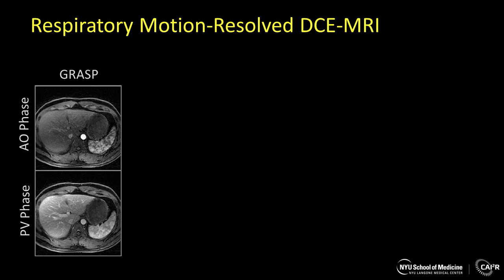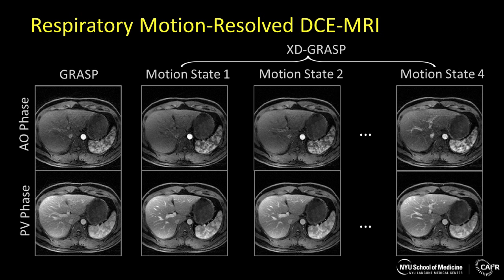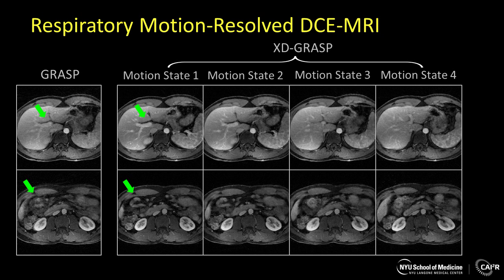Let's see a couple of examples. These two images are from a GRASP reconstruction that doesn't have any motion sorting. If we compare the GRASP results with XTGRASP results, we can see that XTGRASP achieved improvement in vessel-tissue contrast and image sharpness. This is not surprising because the result of GRASP is just the sum of results at each motion state in the XTGRASP reconstruction. This is another example, and we can see similar improvement in XTGRASP reconstruction when compared with GRASP reconstruction without any motion sorting.